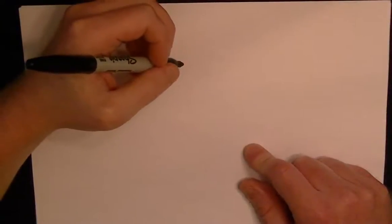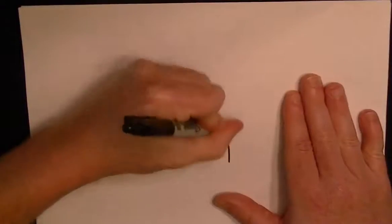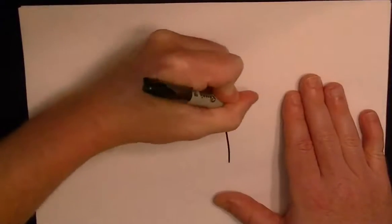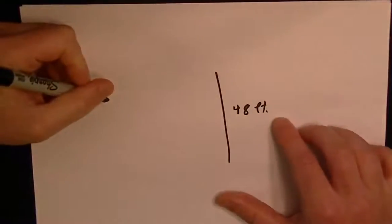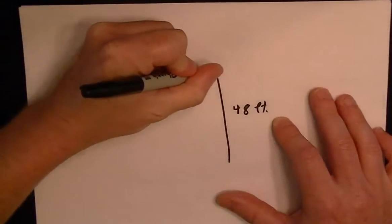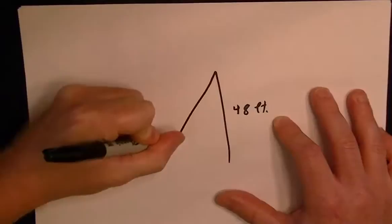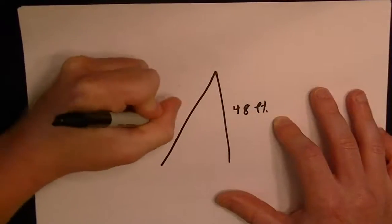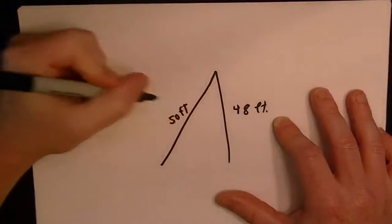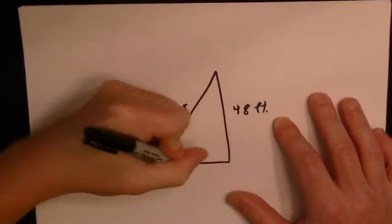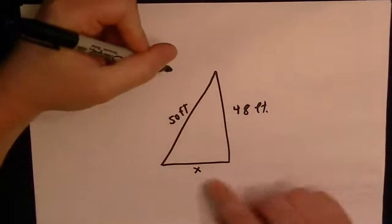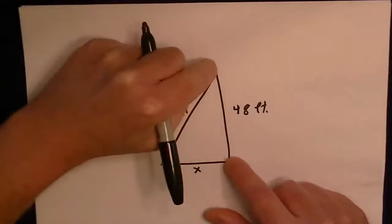Okay, we're told that there's a 48 foot tower, so we'll just draw a tower that's 48 feet. And there's a 50 foot cable attached going down to the ground, so this is a 50 foot long cable. So what they want to know is what this distance at the base is.